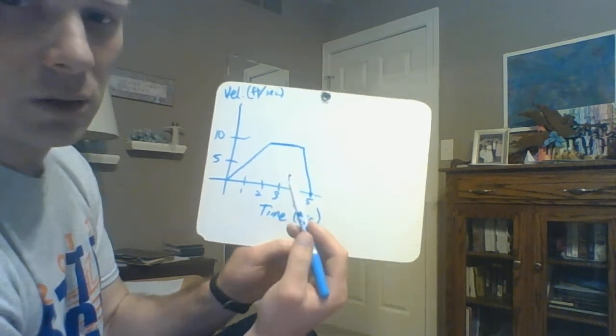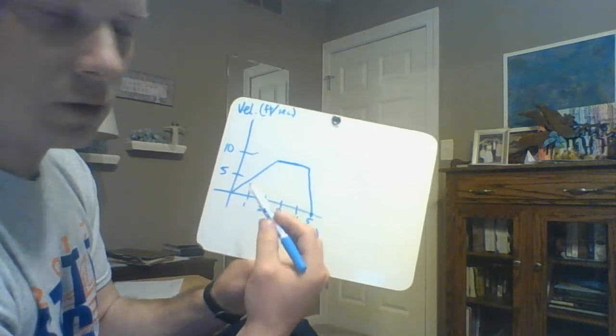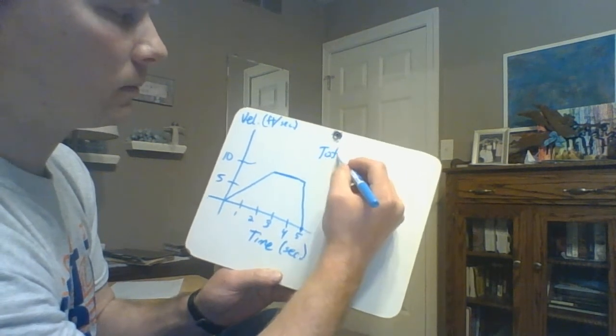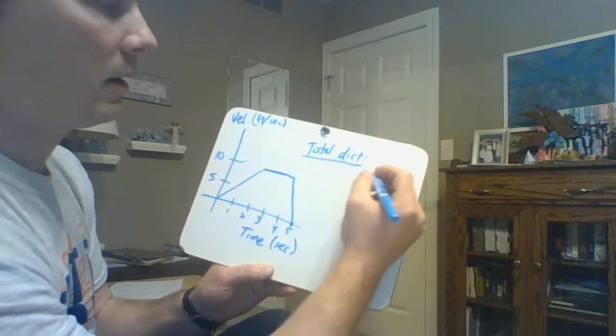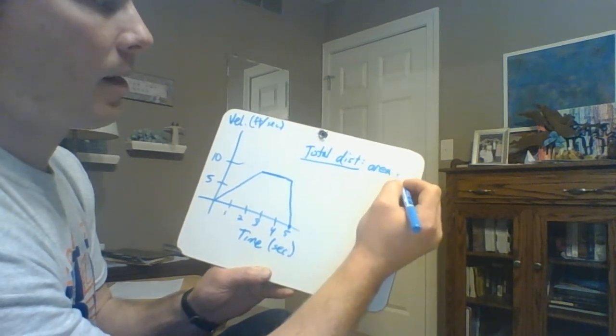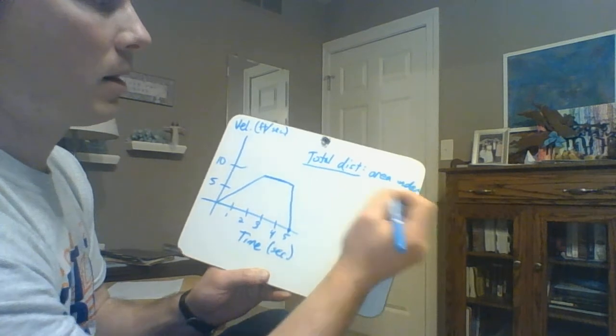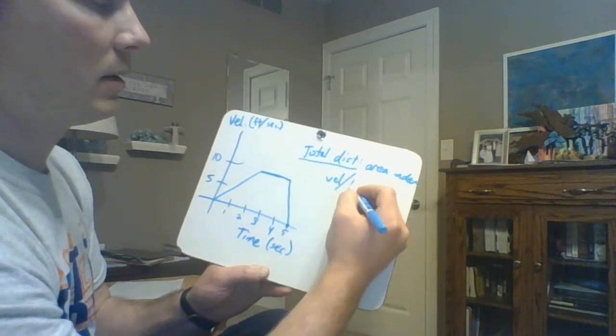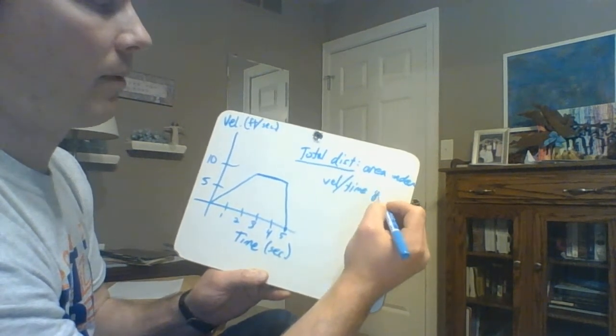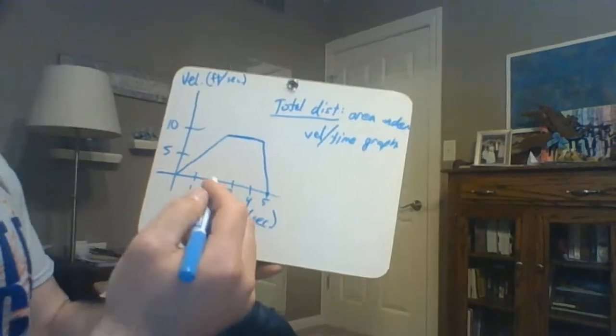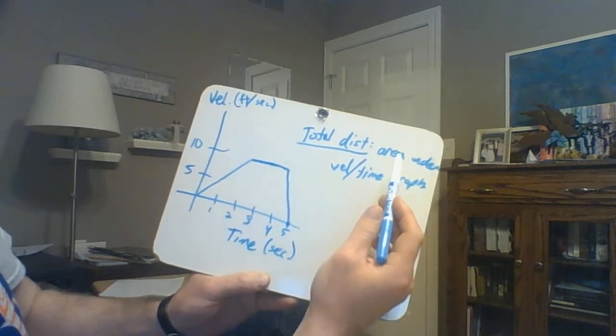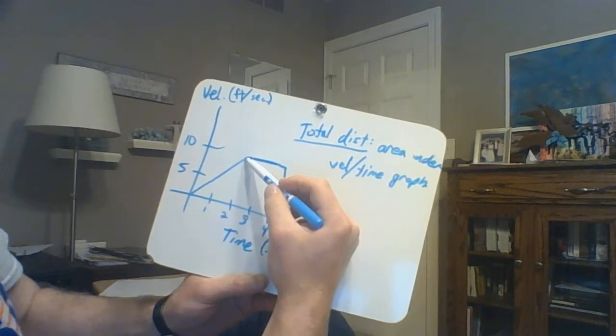One of the things that we do if we want to find the total distance traveled, the total distance is simply the area under a velocity-time graph.